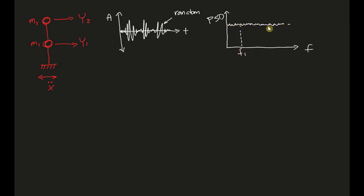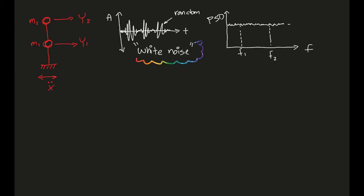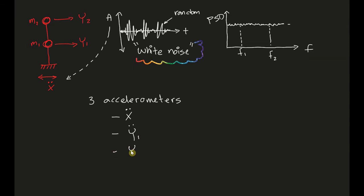At any frequency f1 versus f2, we have roughly the same energy level — that's why we call it white noise. White noise is very useful because it excites all frequency bandwidths and is excellent for experimental verification and system identification. We use three accelerometers: one at the base to measure ground acceleration, one for y1, and one for y2.